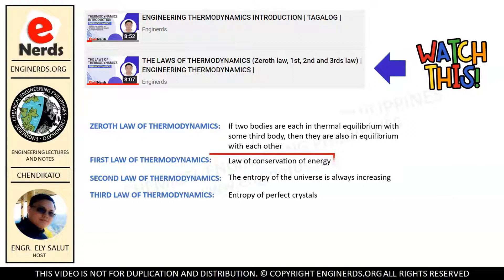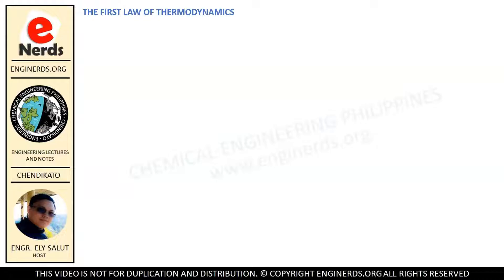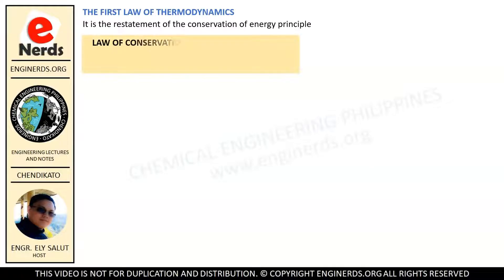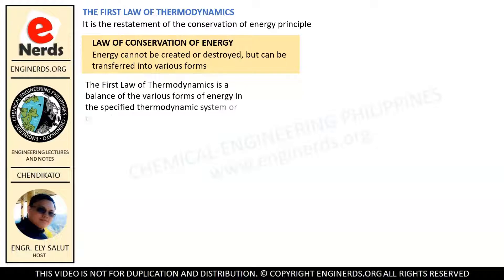Today, we are going to focus on the first law of thermodynamics. The first law of thermodynamics is the restatement of the conservation of energy principle. The law of conservation of energy states that energy cannot be created or destroyed but can be transferred into various forms. Basically, the first law of thermodynamics is a balance of the various forms of energy in the specified thermodynamic system or control volume.